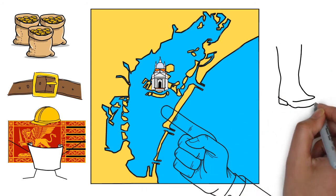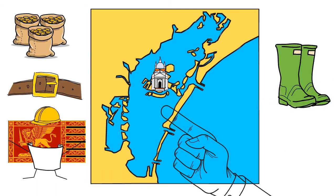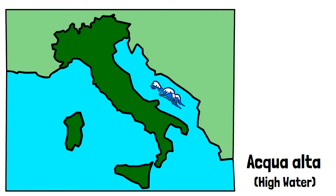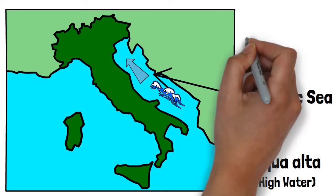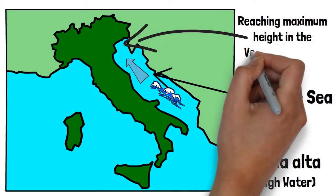it won't come as much of a surprise that the city has been susceptible to flooding. This is caused by a phenomenon called Aqua Alta, or high water, which describes high tide peaks that occur in the northern part of the Adriatic Sea, reaching their maximum in the Venetian Lagoon.